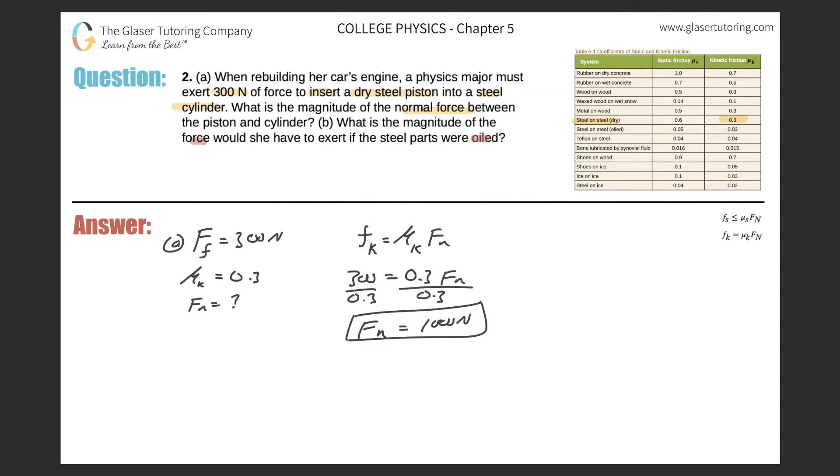All right, so what force are we looking for if they were oiled? So steel on steel oiled now. Again, we're going to still be talking about inserting, so therefore we're still going to be looking at the coefficient of kinetic friction. That's 0.03 this time, so it has decreased by a factor of 10.